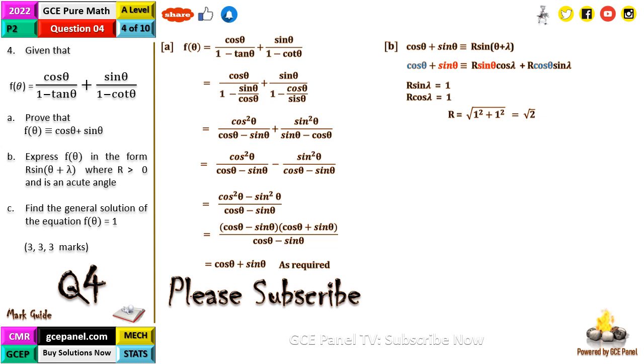So for me, r will be equal to the root of the sum of squares of 1 and 1, that's √2, while our λ will be equal to arctan(1/1), and tan⁻¹(1) is π/4. So therefore our f(θ) is equal to √2·sin(θ + π/4).